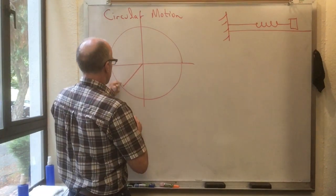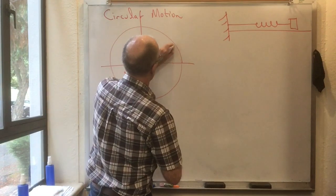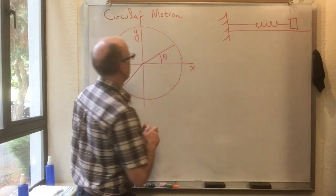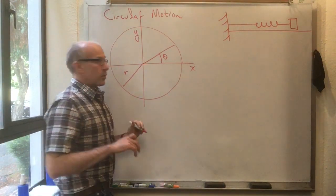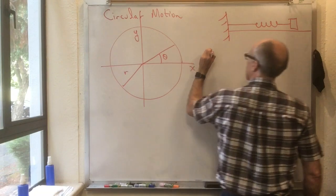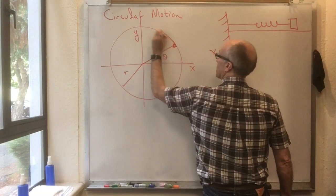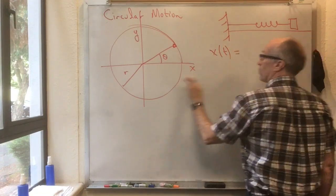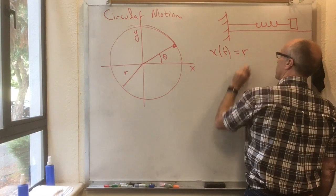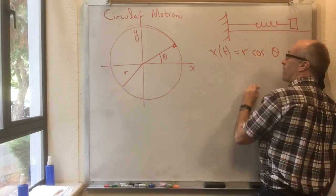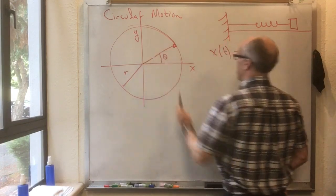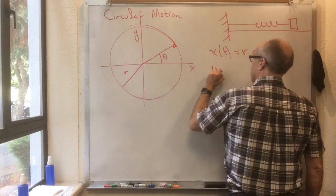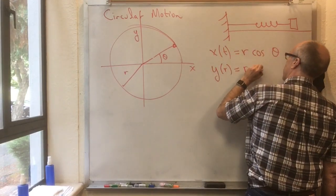Suppose this circle here has radius r. Suppose this angle is measured theta from the plus x axis. Then we can see something pretty straightforward here, which is that if this particle is going around, then we have x as a function of time is equal to r times the cosine of theta. That's some function of time. Theta is going to be changing. r is not going to be changing. Meanwhile, y of t is r sine of theta.